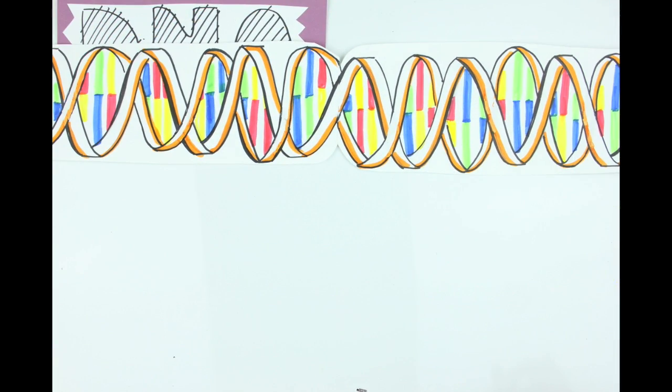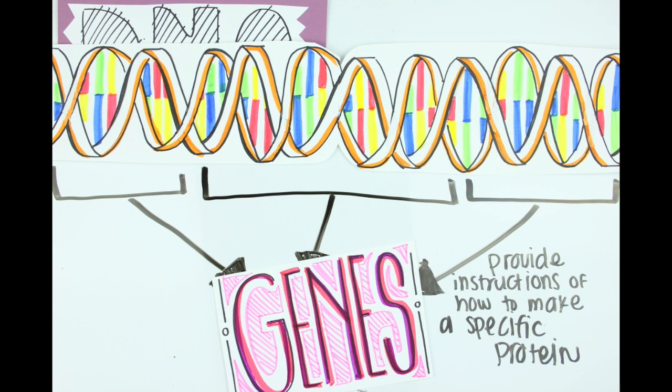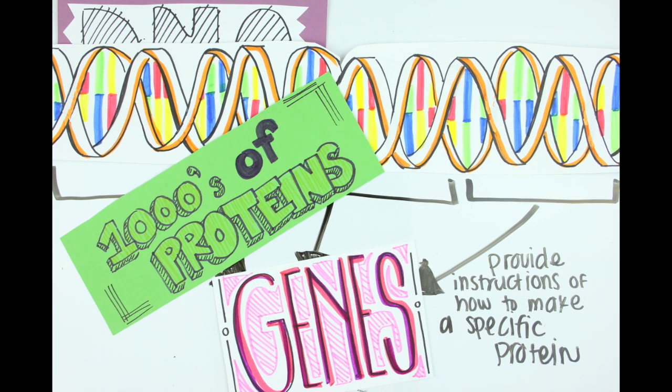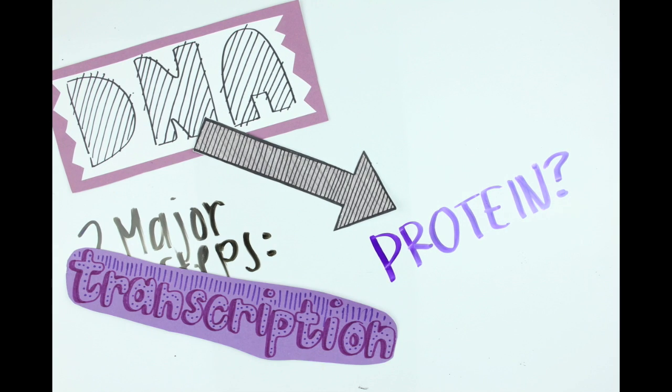When you put these together, they form our DNA. This DNA is divided into genes, each providing instructions on how to make a specific protein. It's the different combinations of these nucleotides that allow us to create thousands of proteins, just like the 26 letters in our alphabet can be arranged to form different words and sentences with multiple meanings. Wait, so how does this DNA create proteins anyway? It happens through two major steps: transcription and translation.